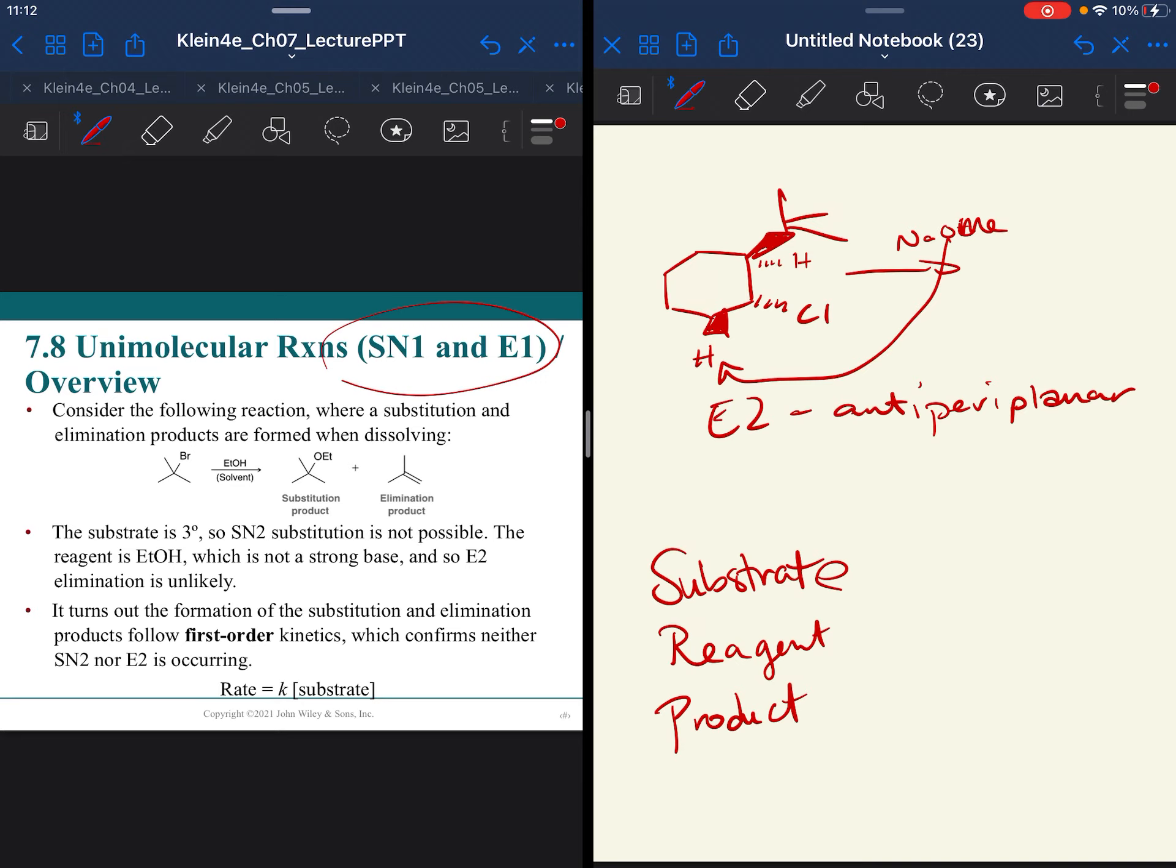In Part 4, we will talk about our unimolecular reactions, SN1 and E1. After we get through those, then we will do a bunch of practice. The way Chapter 7 is, you get a lot of information and you really can't practice too much until you've learned all four mechanisms.